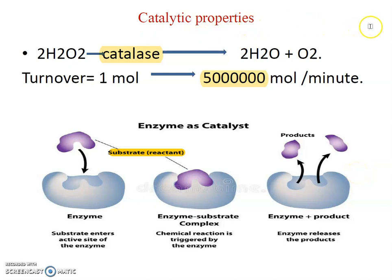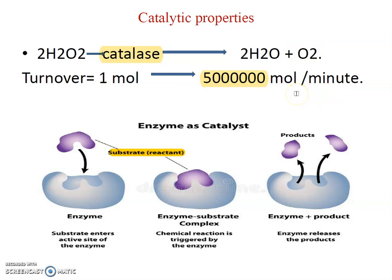The next property is the catalytic property, which means enzyme increases the rate of biochemically possible reactions. An example is catalase, an enzyme which converts hydrogen peroxide into water and oxygen. At the suffix of an enzyme name there is '-ase', which indicates that an enzyme is present. Turnover rate means how many molecules of substrate one molecule of enzyme converts into product. A single molecule of catalase converts 50 lakh molecules of hydrogen peroxide into water and oxygen in a single minute — this is a huge turnover rate.